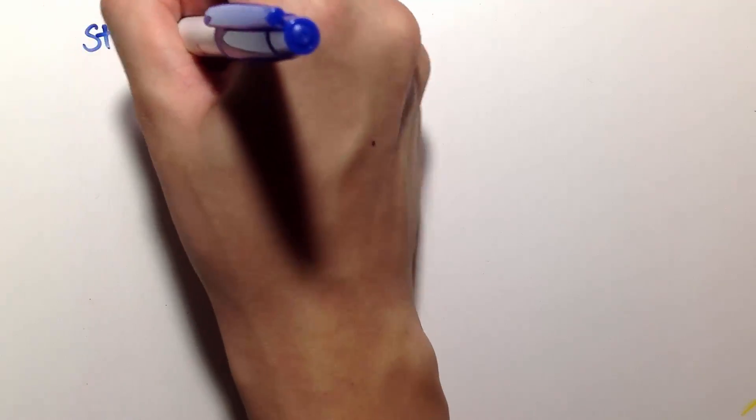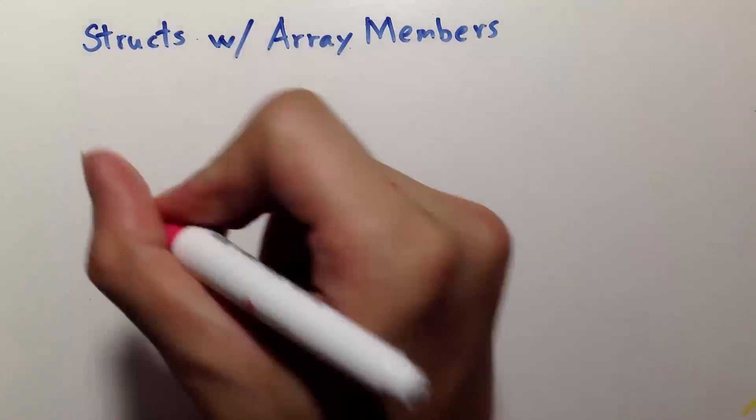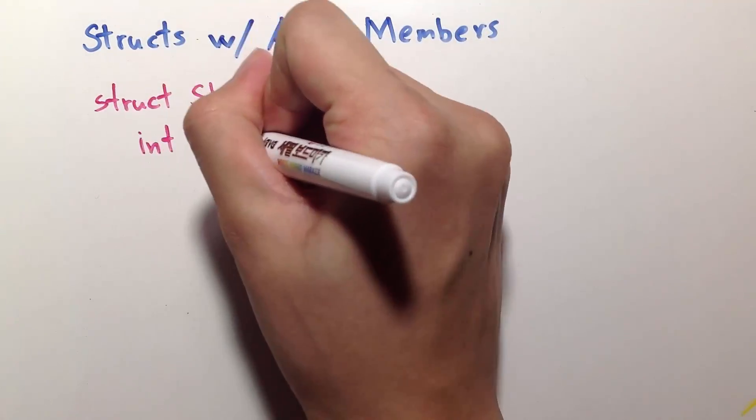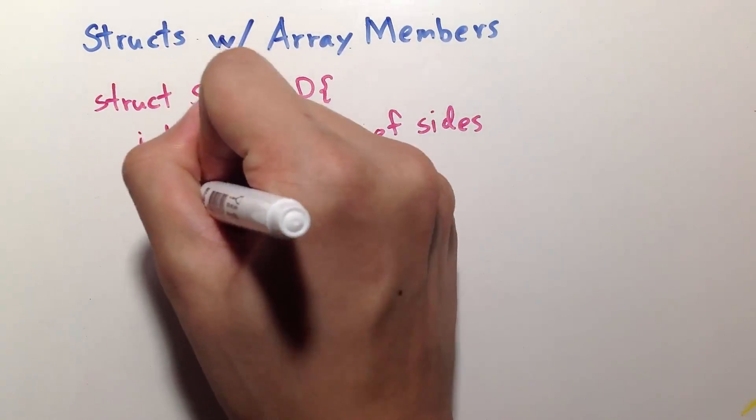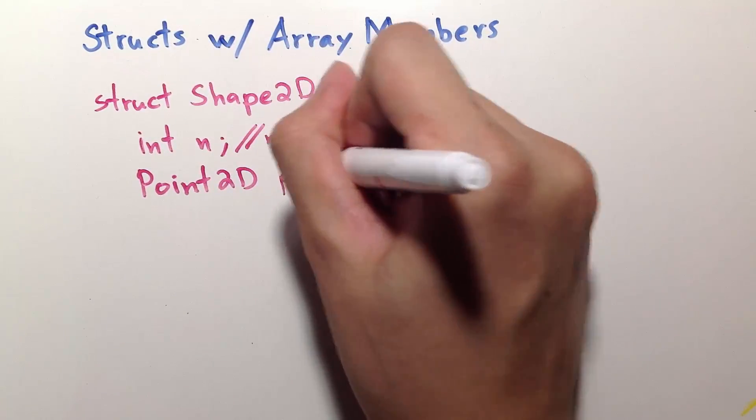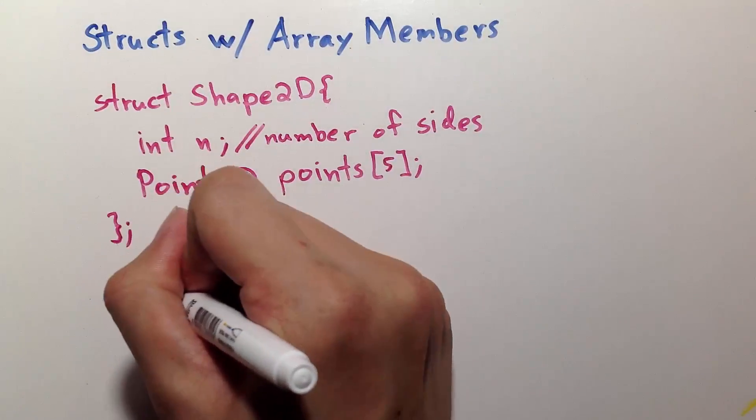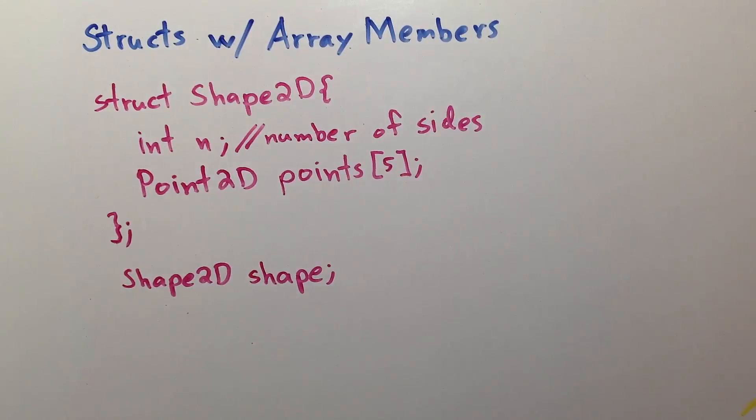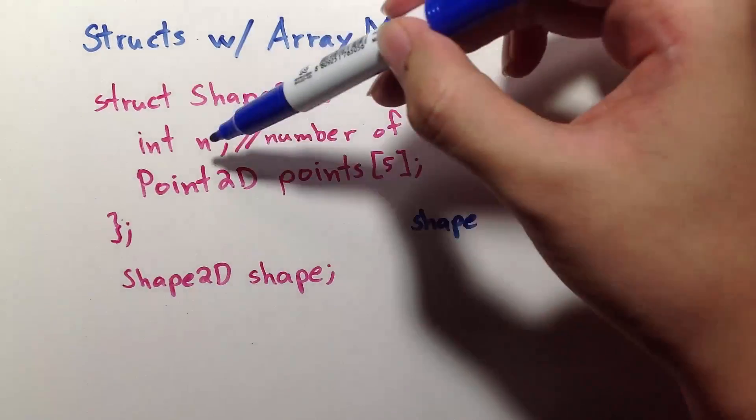Let's have structures with array members. Let's have a new structure called shape2d composed of two children. The first is an integer n indicating the number of sides. And the second is an array of point2d called points with a size of 5. Let's create an instance of this new structure and call it shape. What does this look like in memory? Shape has two children, n and points.